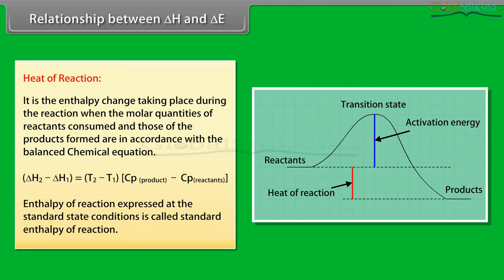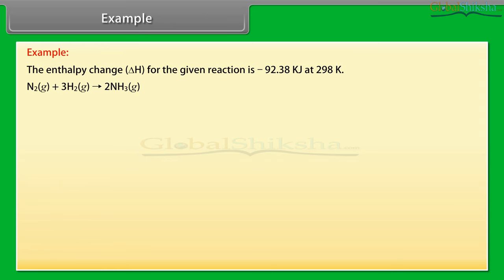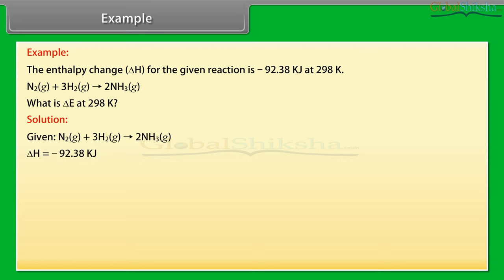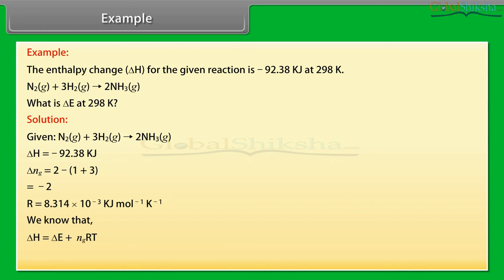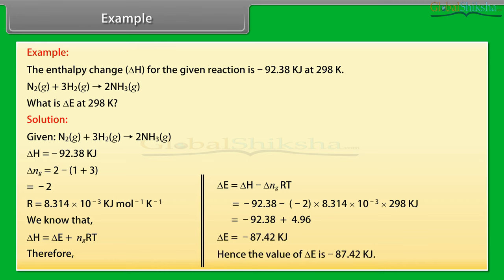Enthalpy of reaction expressed at standard state conditions is called the standard enthalpy of reaction. Example on the relation between ΔH and ΔE: the enthalpy change ΔH for a given reaction is −92.38 kJ at 298 K. What is ΔE at 298 K? Given: ΔH = −92.38 kJ, Δn_G = 2 − (1 + 3) = −2, R = 8.314 × 10⁻³ kJ/mol·K. Using ΔE = ΔH − Δn_G RT, substituting the values gives ΔE = −87.42 kJ.